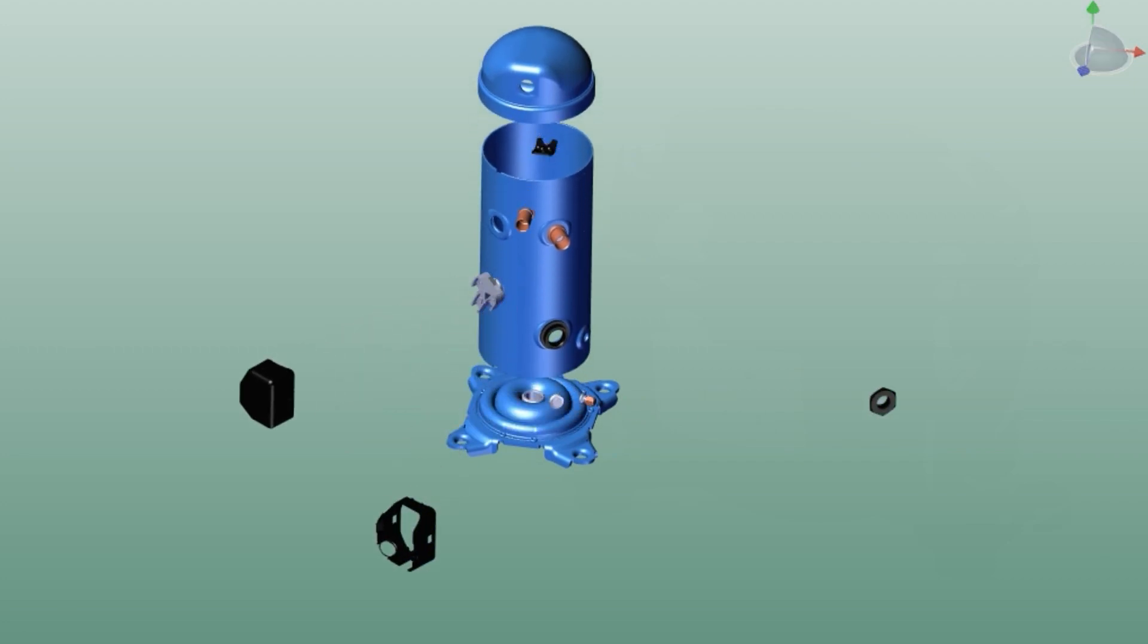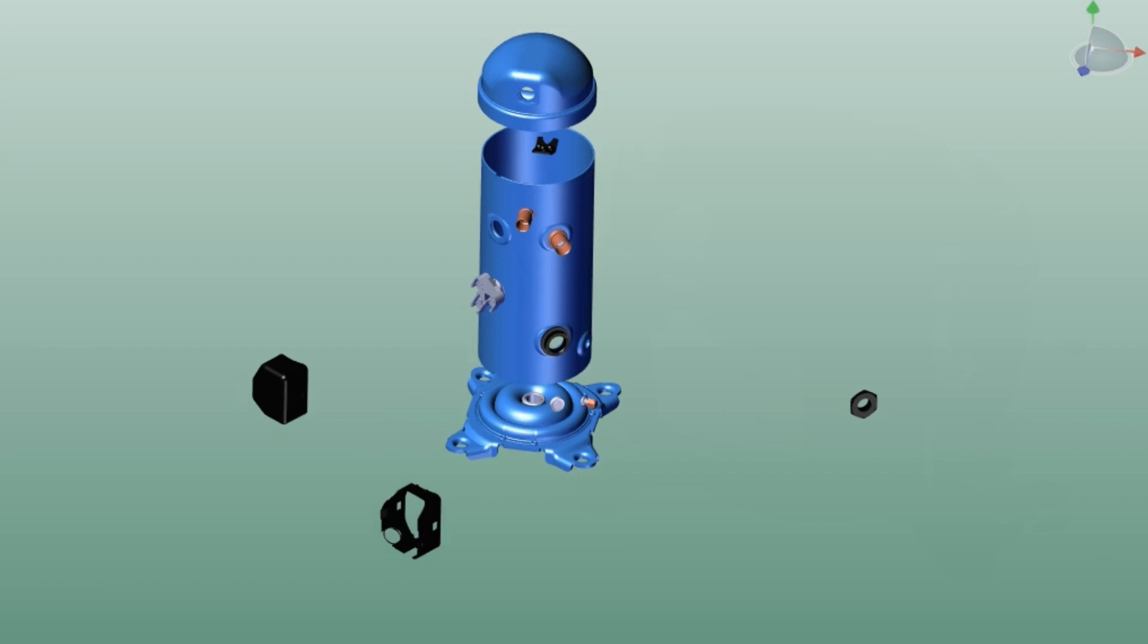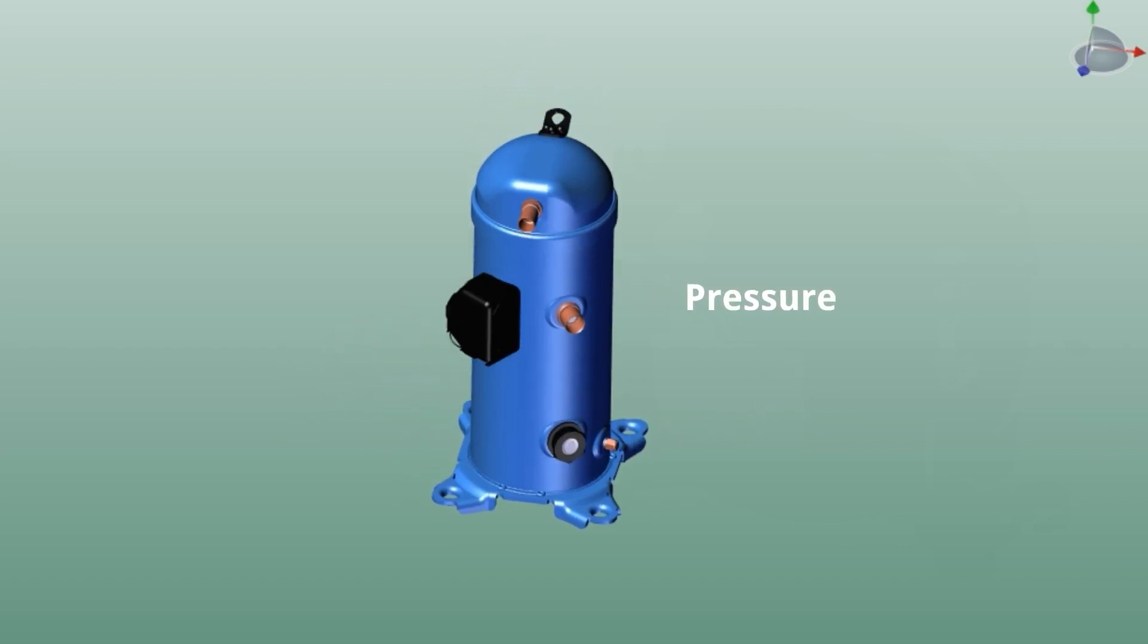Normally reciprocating or scroll or screw compressor is used. It compresses the refrigerant vapor and increases the pressure and temperature.